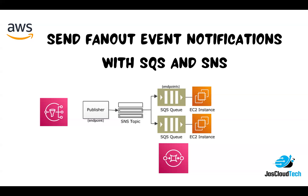The idea is: suppose we are developing some e-commerce application. If you have certain orders to be processed, we can have an SNS topic — whenever an order is placed, the message will be delivered to the queuing system to which it is subscribed. So basically there will be a publisher, a topic, and a subscriber in the queue system.